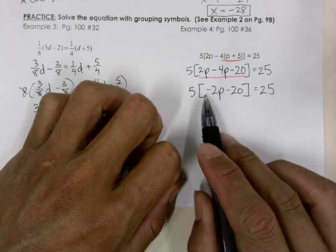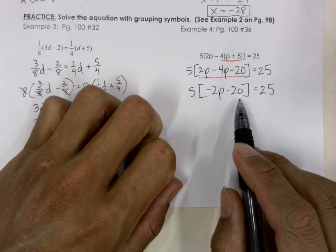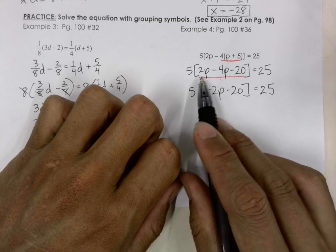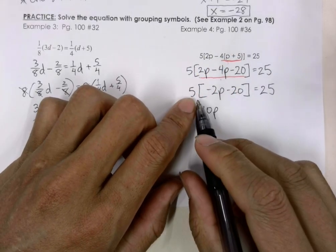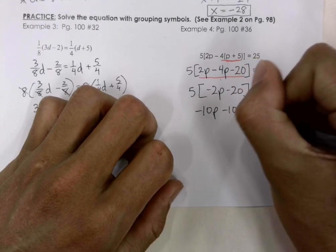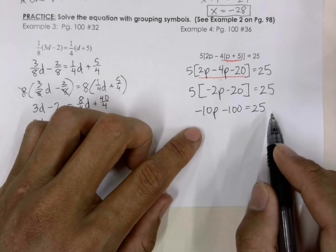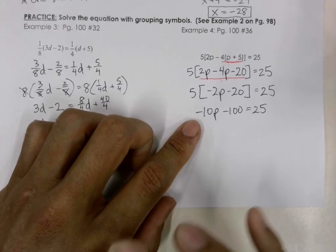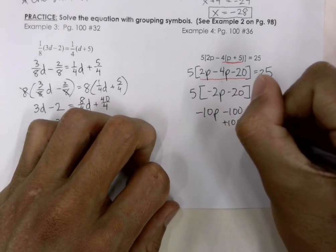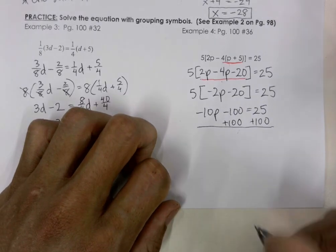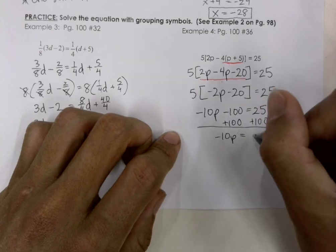Now that we cannot simplify further inside the brackets, we treat the brackets as parentheses and distribute out the 5. Positive 5 times negative 2p gives negative 10p, and 5 times negative 20 gives negative 100, so negative 10p minus 100 is equal to 25. We add 100 to both sides — negative 100 plus positive 100 is 0, and 25 plus 100 is 125.